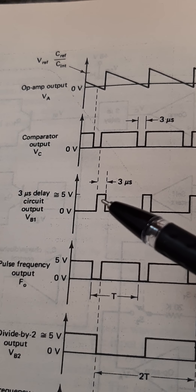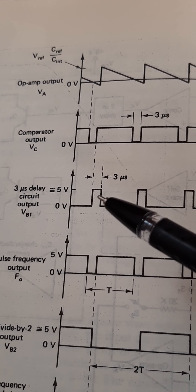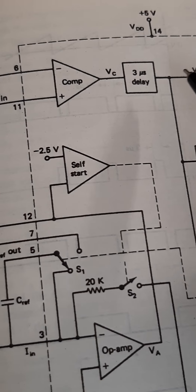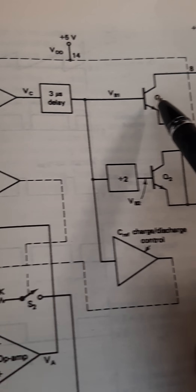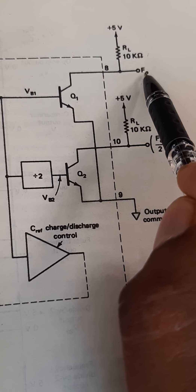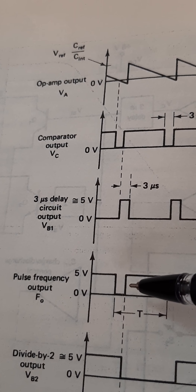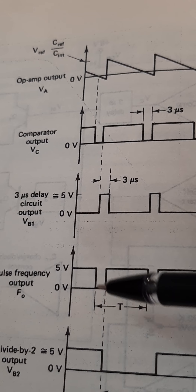When the 3 microsecond delay output is high, the transistor is on and F0 output is 0. Otherwise, the output is F0. So whenever the delay output is high, the transistor output F0 is 0; otherwise it equals F0.